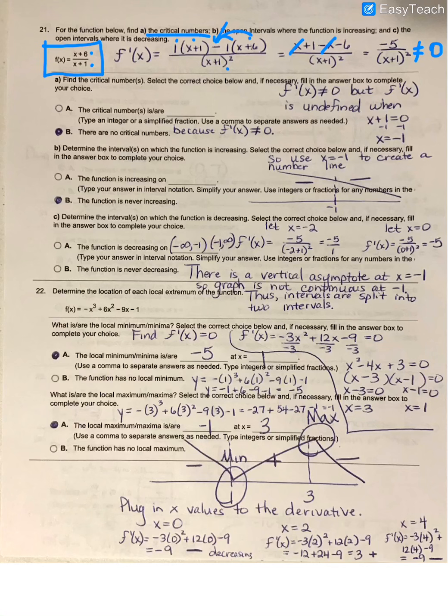We also have to consider where it is undefined, and so what we notice is that if you take the bottom part of this fraction and set it equal to 0, then x equal negative 1 makes it undefined. Now, if I set up my number line to consider that as a potential critical number,